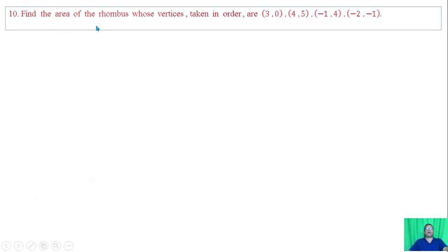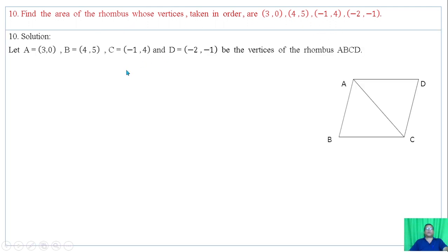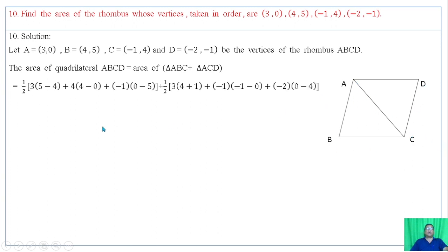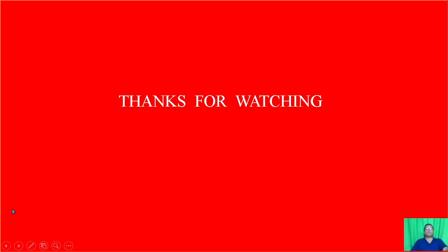Question 10: Find the area of the rhombus whose vertices taken in order are given. Let A denote the first point, B the second point, C the third point, and D the fourth point as the vertices of rhombus ABCD. Area of the quadrilateral ABCD is area of triangle ABC plus area of triangle ACD. Using appropriate formula we have the calculations and summing up we get 24 square units.